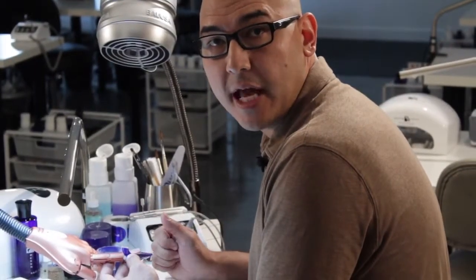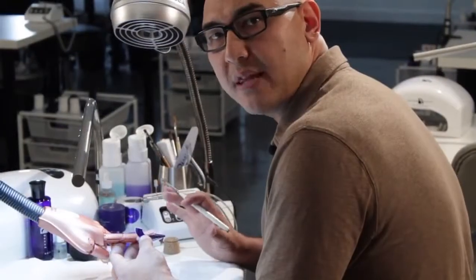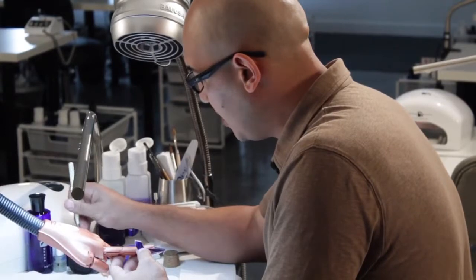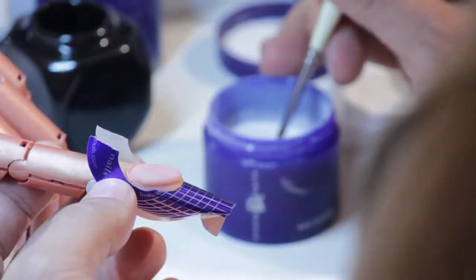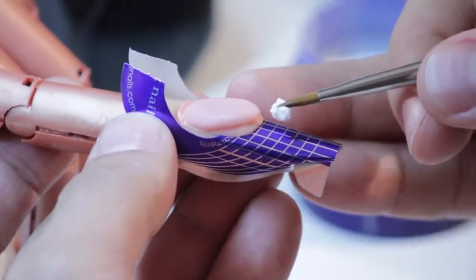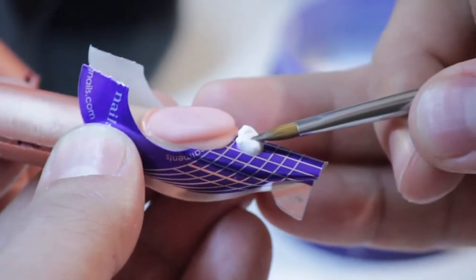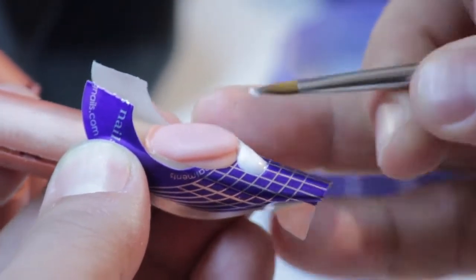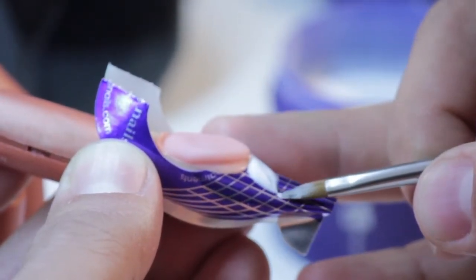We are ready now for our ribbon application. Once we get the form on, we're going to take our imagination art brush, dip it inside the liquid, and pick up a large pearl of powder. We're going to set it down. And remember, while it's wet, I'm actually going to drag it close to the smile line and down the edge.